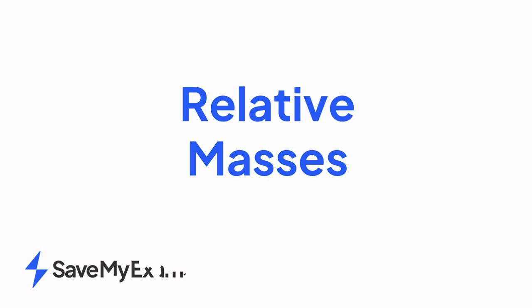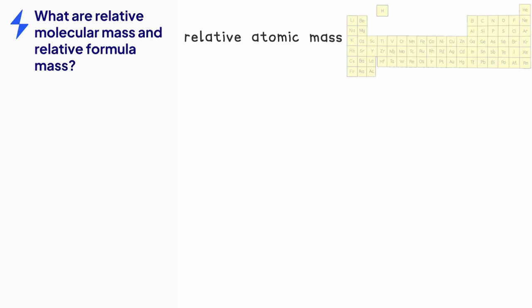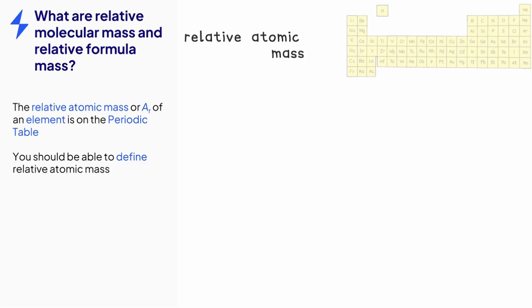In this video we will be looking at relative atomic mass and relative molecular or formula mass. Relative atomic mass or Ar is found on the periodic table. Work backwards when defining relative atomic mass.